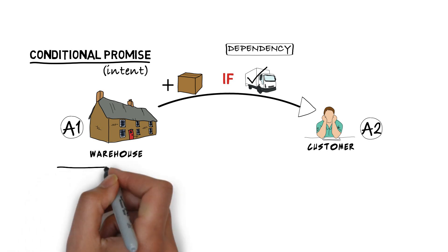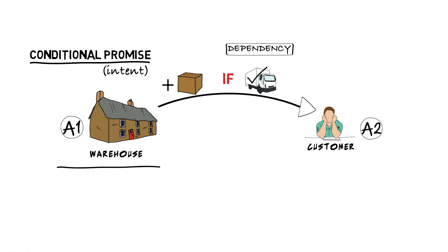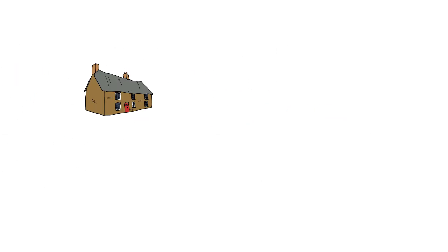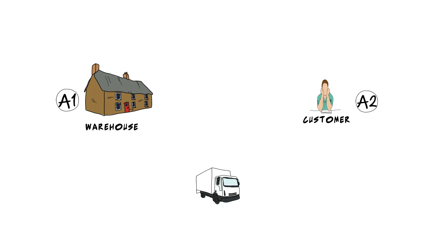To make it a real promise, the warehouse also has to promise that it will do its best, either to act as the delivery agent itself, or to acquire the promise from a third party that would fulfil the condition of delivery. To promise the intended delivery with three agents, and without violating the autonomy rule, we need to do the following.